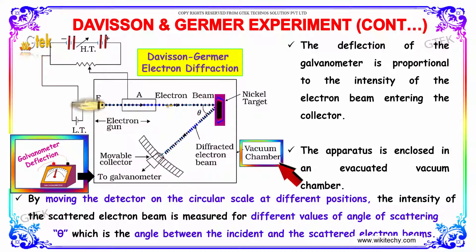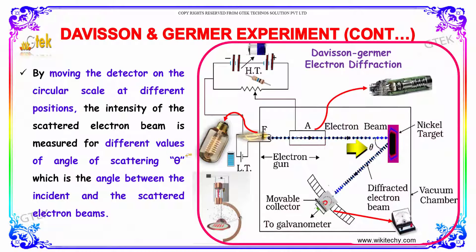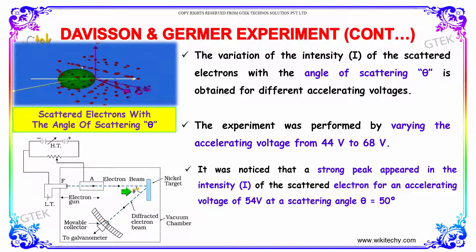By moving the detector on the circular scale at different positions, the intensity of the scattered electron beam is measured for different velocities and for different values of the angle of scattering theta, which is the angle between the incident and the scattered electron beams. The variation of the intensity of the scattered electron with the angle of scattering theta is obtained for different accelerating voltages.